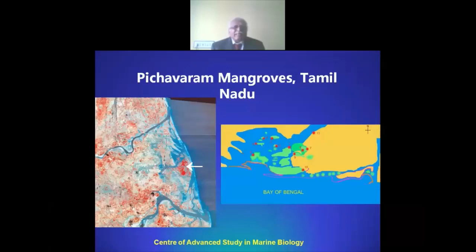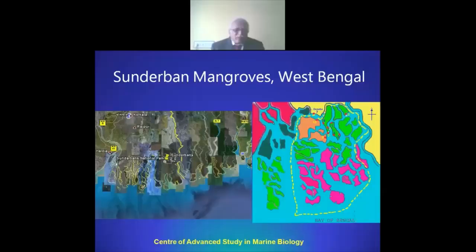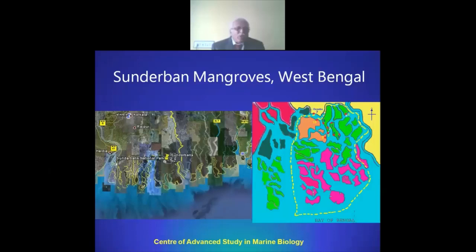Here is a case study carried out in the major mangroves of India along the east coast to describe mangrove malacofaunal diversity — Pichavaram mangroves, Uthabet mangroves in Tamil Nadu, Krishna mangroves in Andhra Pradesh, Koringa mangroves in Andhra Pradesh, Pitharganika mangroves in Odisha, and Sundarbans mangroves in West Bengal, which is the largest mangrove in the globe, shared by India and Bangladesh. Coming to the faunal assemblage in Pichavaram mangroves: one species of infauna, two species of epifauna, and seven species of arboreal fauna.